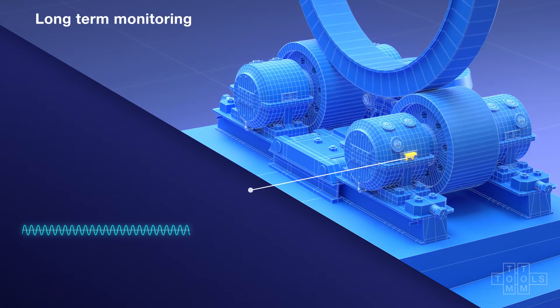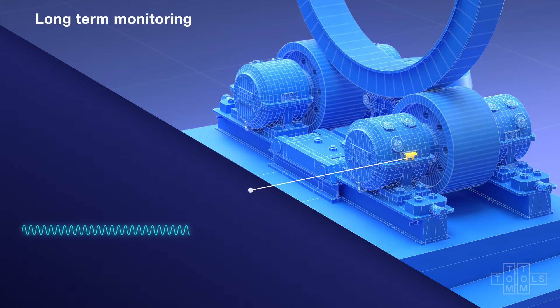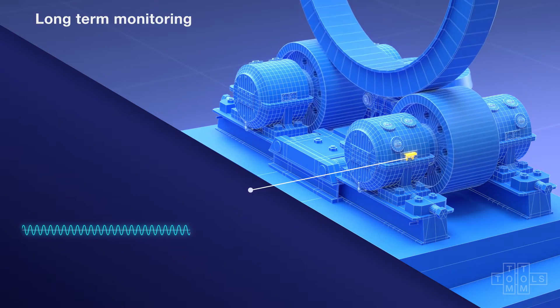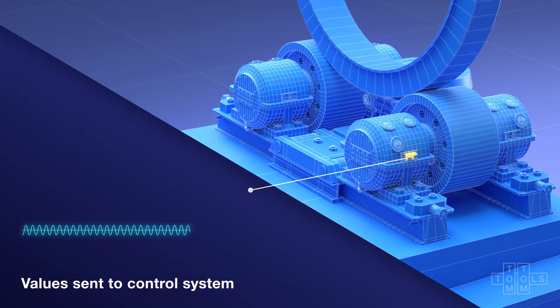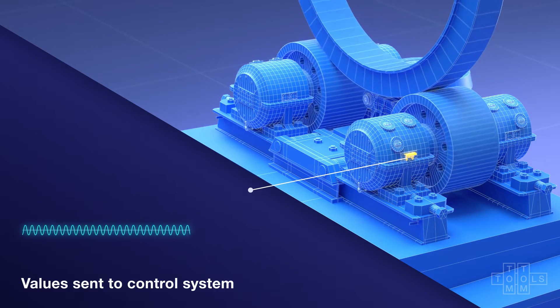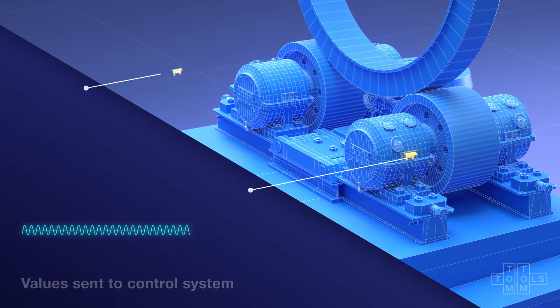This model is permanently installed, continuously measuring the tilting. The measured values are typically displayed and trended in the plant's control room, where alarms can be set to warn of potential roller overload.